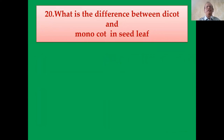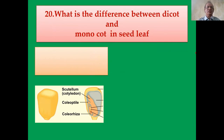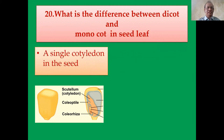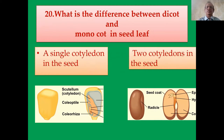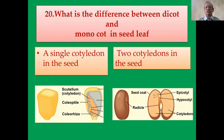What is the difference between dicot and monocot in seed leaves? The maize seed is an example of a monocot plant — it has a single cotyledon in the seed. In dicot plants, there are two cotyledons in the seed. The best examples are soya bean and dal.